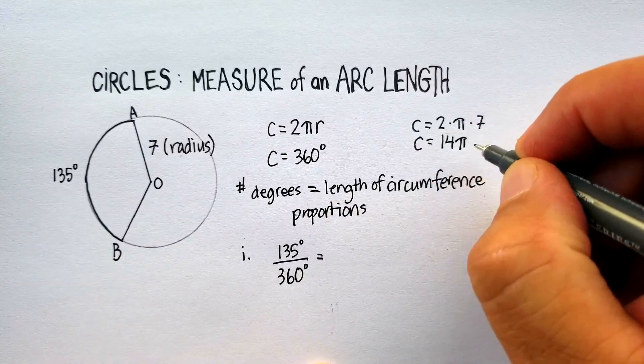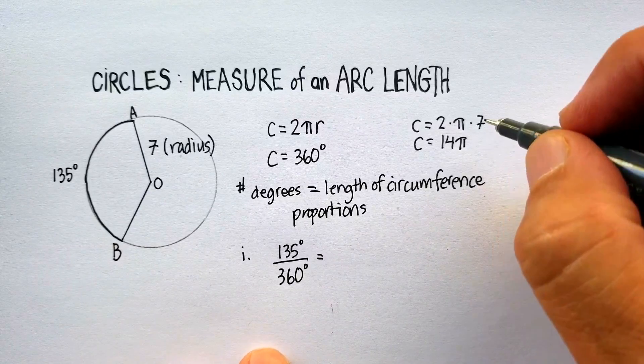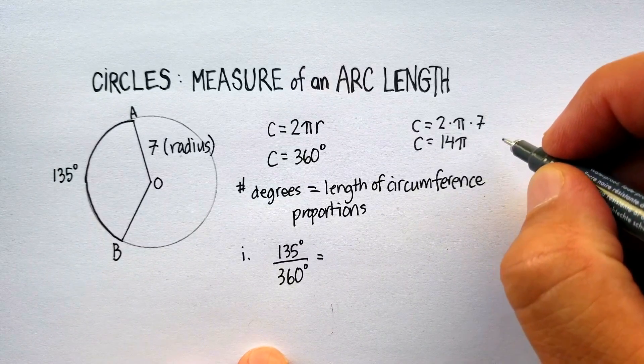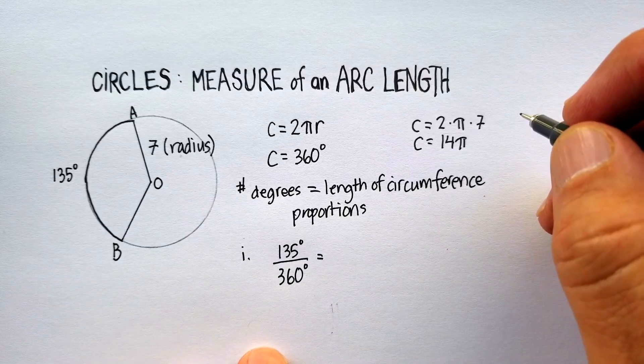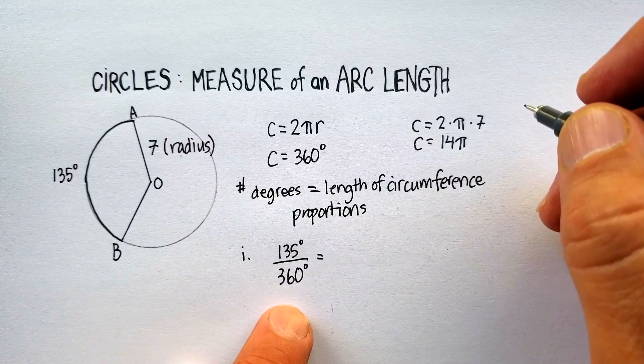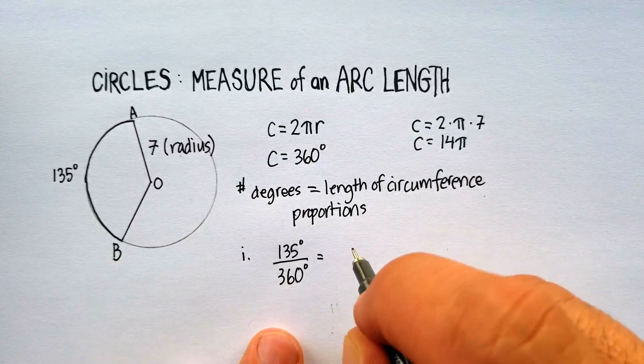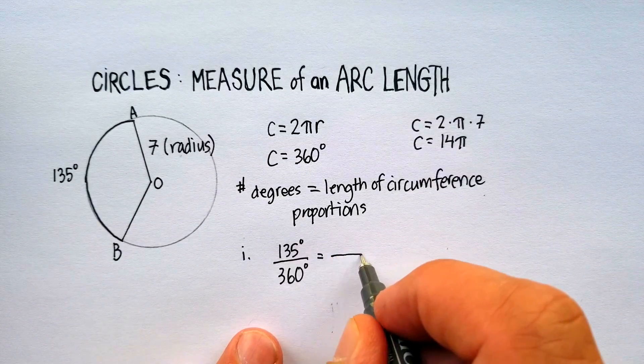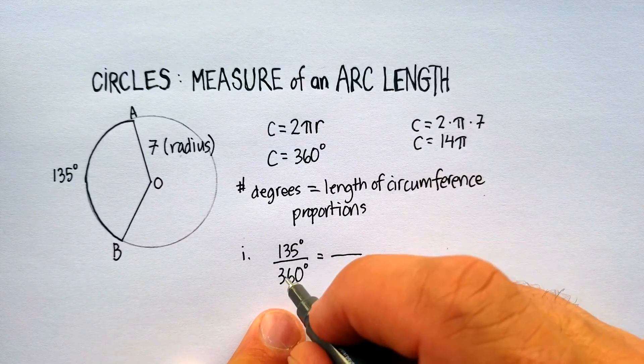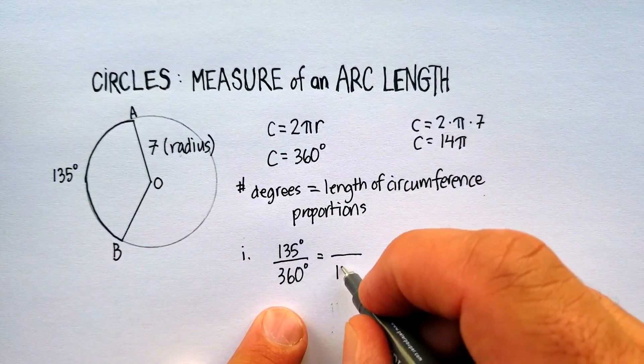Now I'm just going to leave the answer in terms of pi. If you want to multiply it, pi 3.14 or 22 over 7, you're perfectly welcome to do that. It just really depends on what the teacher is looking for. So in this case, we know that the whole distance around the 360 is 14 pi.